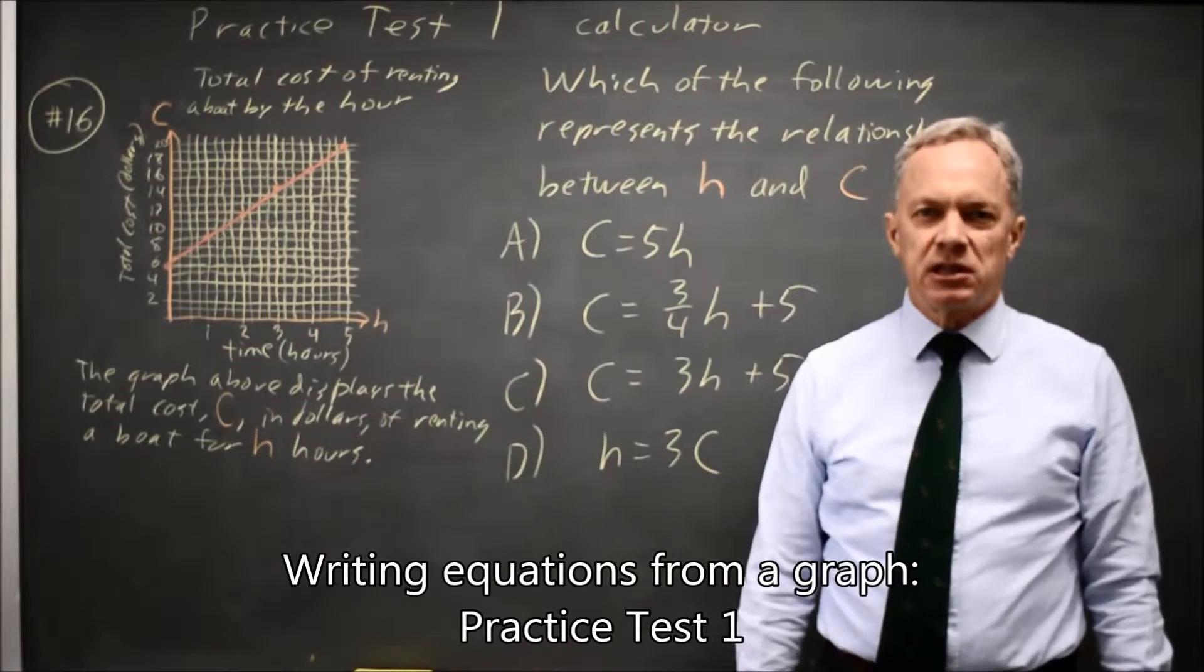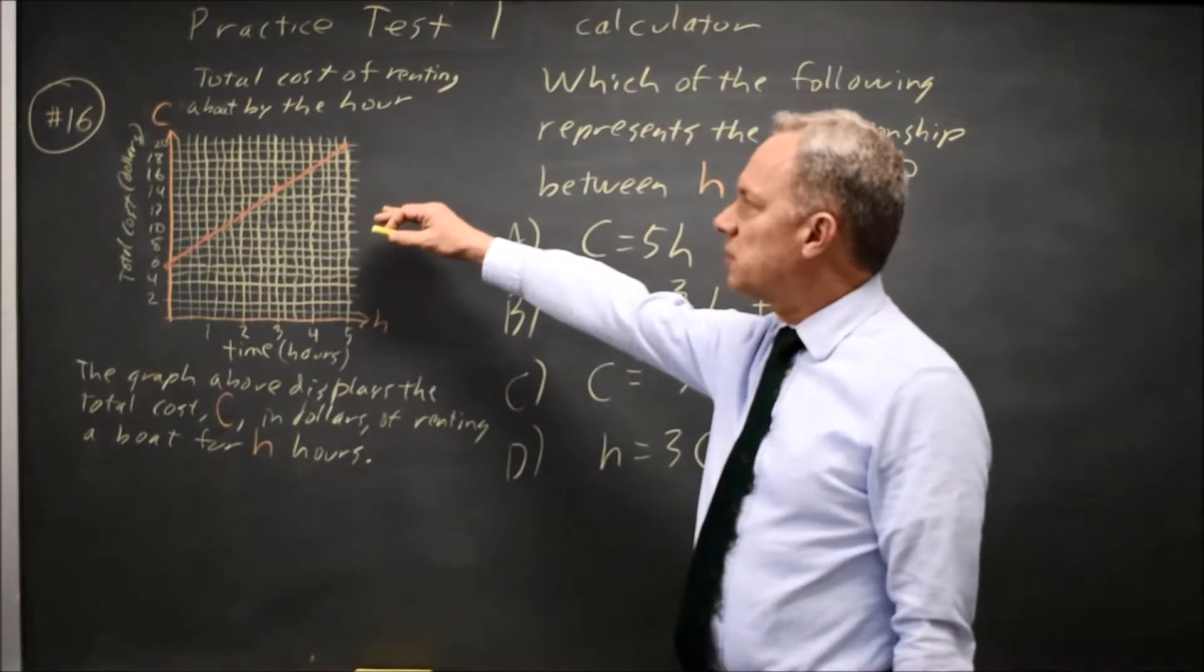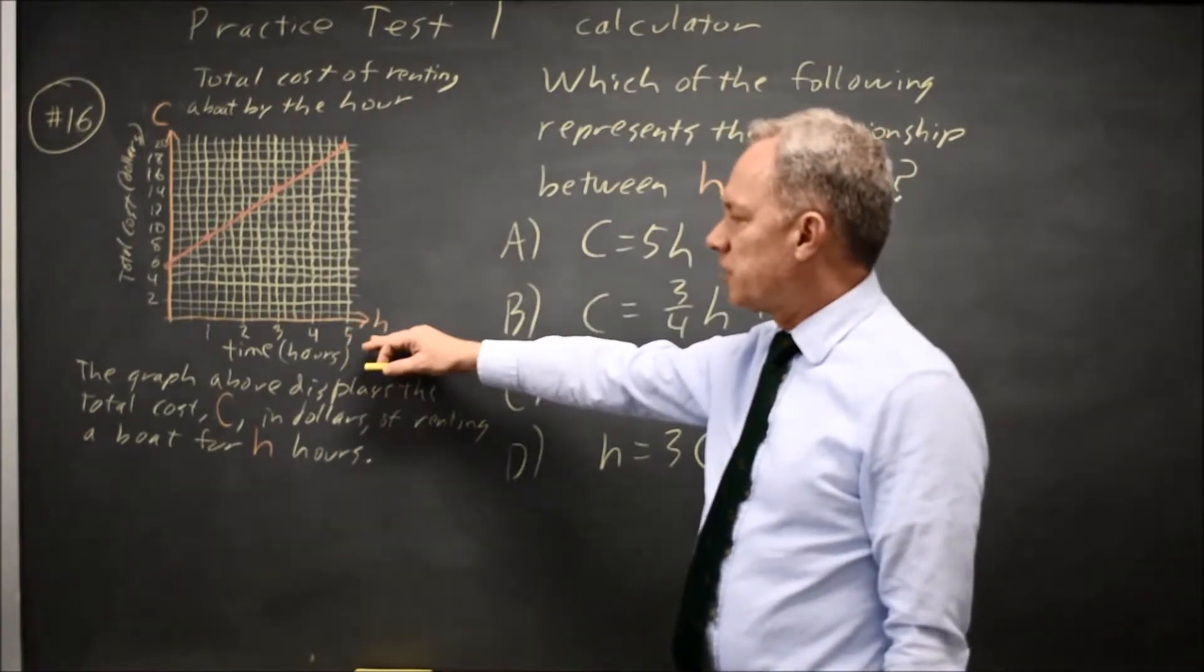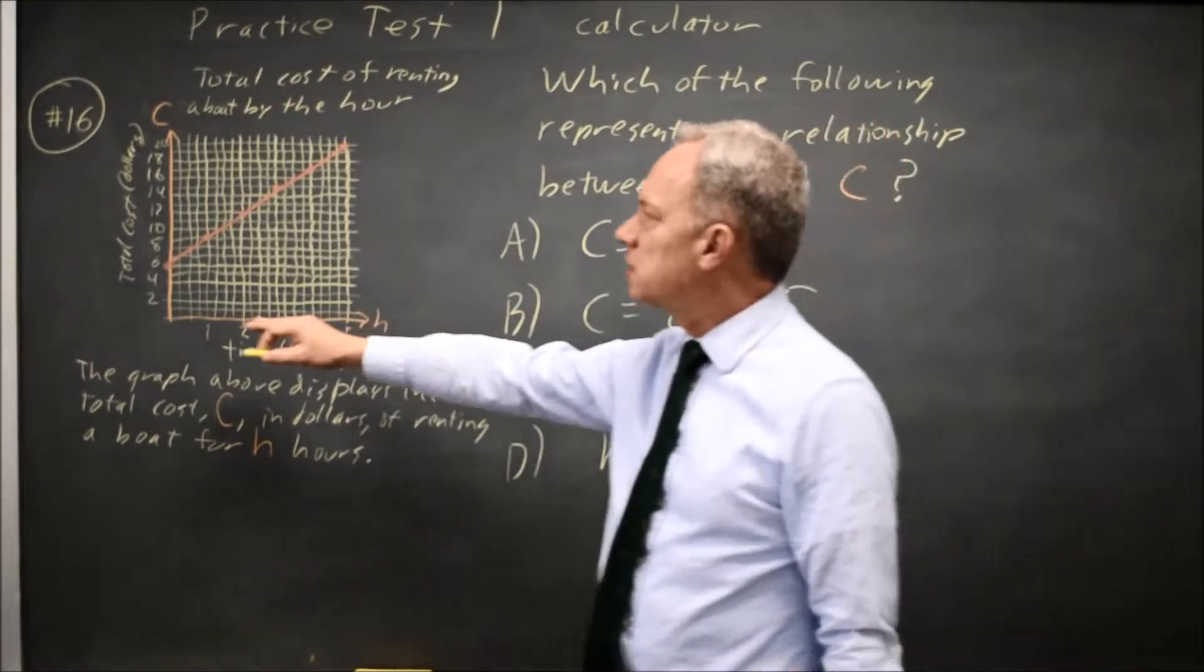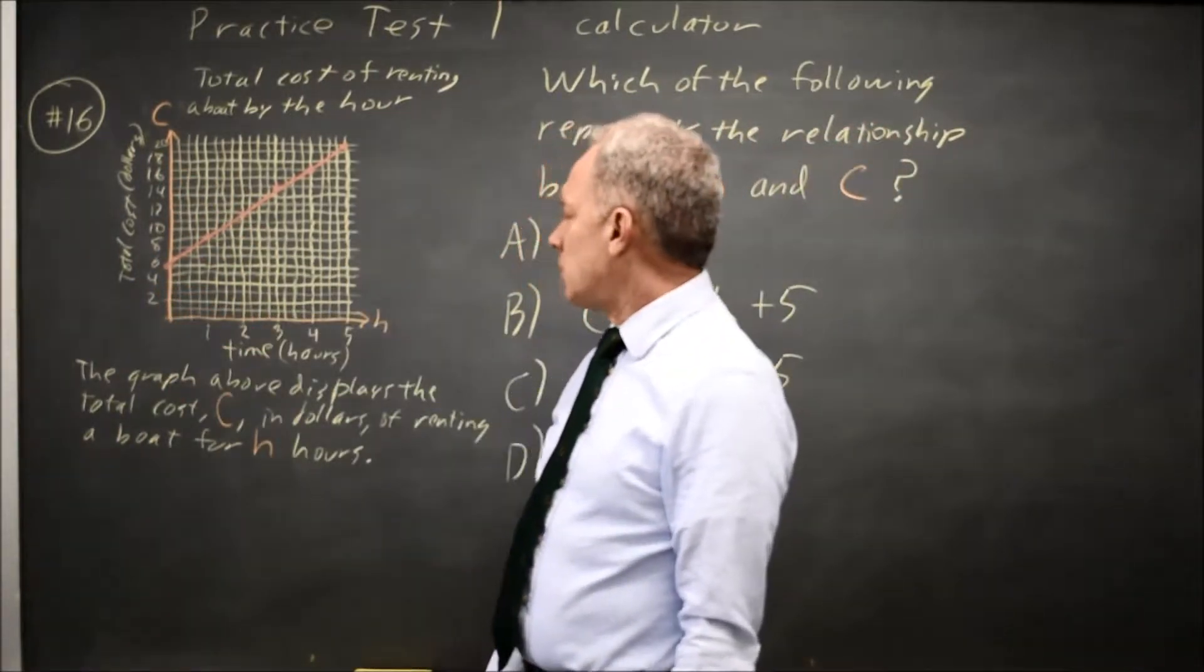This is calculator question number 16 from practice test 1. College Board gives us a graph relating the cost of renting a boat to the number of hours rented, where our horizontal axis, H, is number of hours. Vertical axis, C, is total cost in dollars.